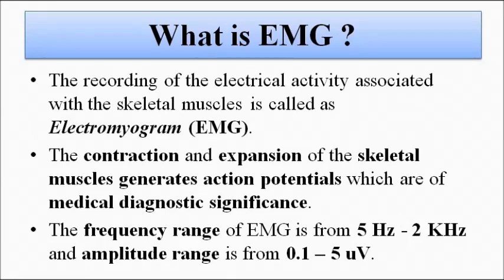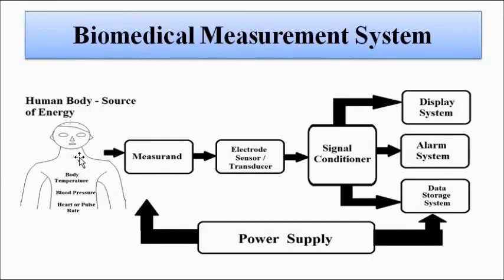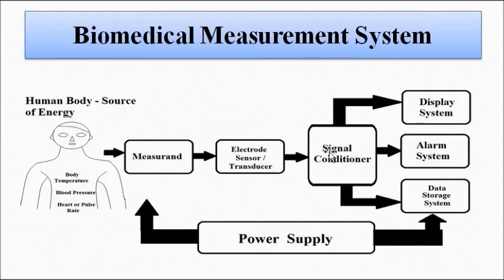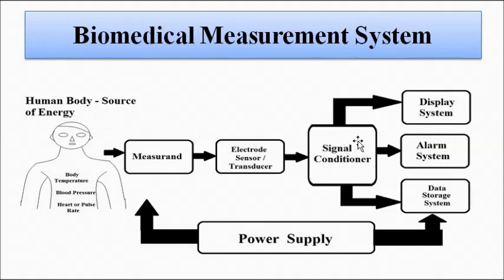This is a basic biomedical measurement system which we have already discussed. The signal to be measured — be it ECG, EMG, or EEG — has to be acquired with the help of suitable electrical electrodes, where a sensor or transducer converts the parameter to a voltage or current signal. That signal is then fed to the signal conditioner and processing unit for amplification, filtering of noise, frequency response matching, linearization, and impedance matching. The conditioned signal is then fed to the output unit for displaying, alarm generation, or storing.